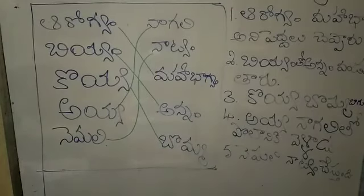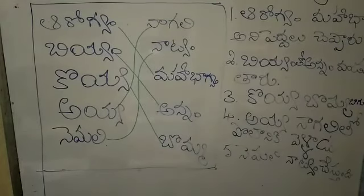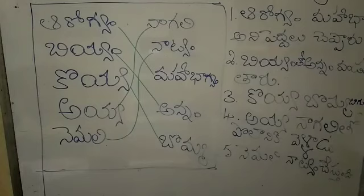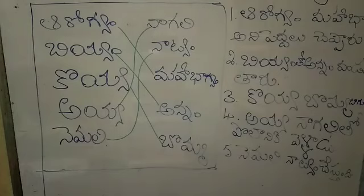See, children — 'Koya Bumma bagundi.' 'Ayya Nagali tho polani ki villadu.' 'Nemali Natyam cheeshtundi.' See, children — these all are sentences.